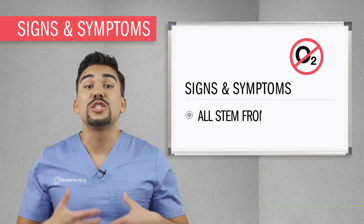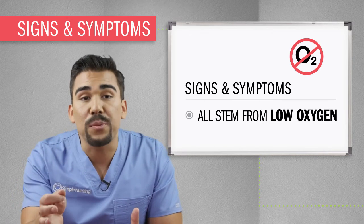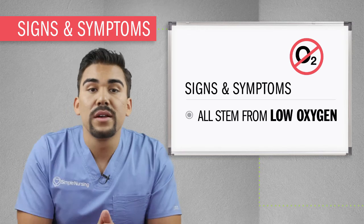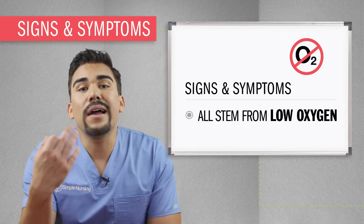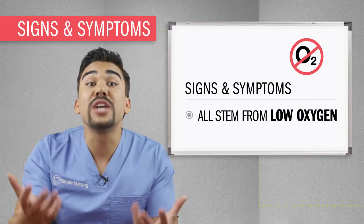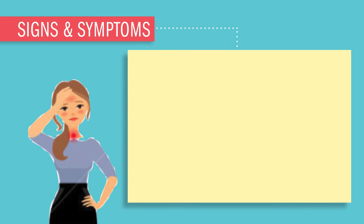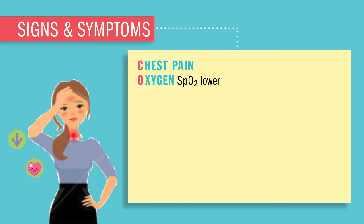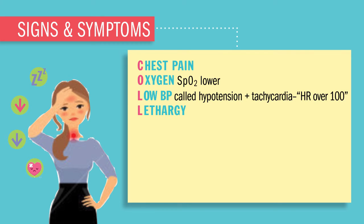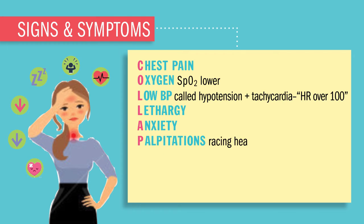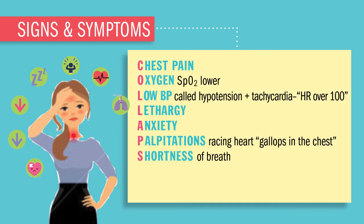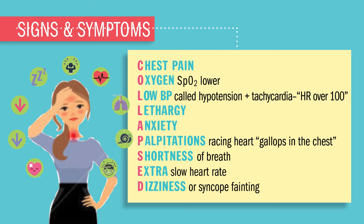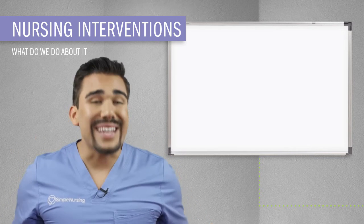Signs and symptoms all stem from low oxygen and low cardiac output — all from this low heart rate. We'll see classic subjective complaints like feeling like you're going to faint. For objective signs and symptoms, we use the acronym COLLAPSED: C for chest pain, O for oxygen SPO2 saturation that's lowered, L for lethargy or fatigue, A for anxiety, P for palpitations — a racing feeling under the chest, S for shortness of breath or dyspnea, E for extra slow heart rate (though it depends on the type of junctional rhythm), and D for dizziness and diaphoresis — sweating.